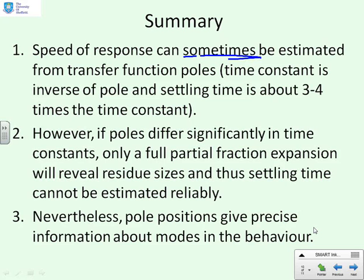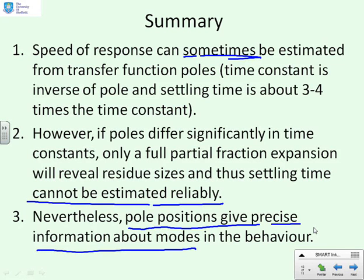However, if the poles differ significantly in time constants, you'd have to use a partial fraction expansion and find the residue sizes, and that the settling time cannot be estimated reliably. So if you've got significantly different poles in terms of their time constants, you really cannot estimate the settling time because it depends upon which mode is dominant, if any. But the most important thing is that pole positions do give us precise information about the modes in the behavior. So you know how fast each mode will converge, the speed of each mode.